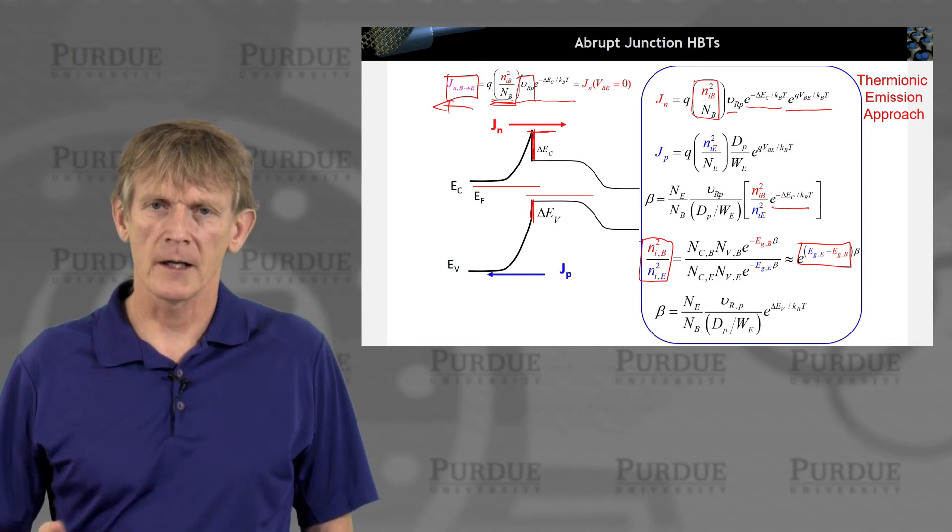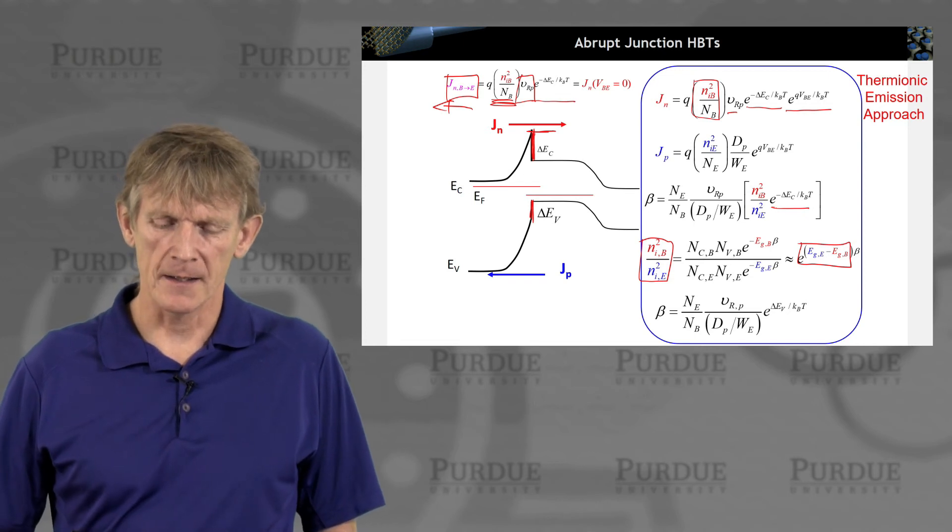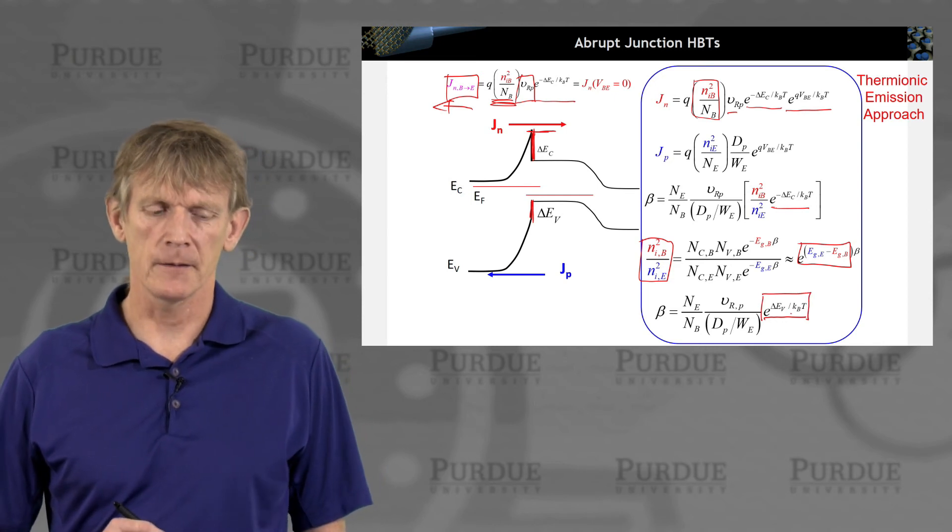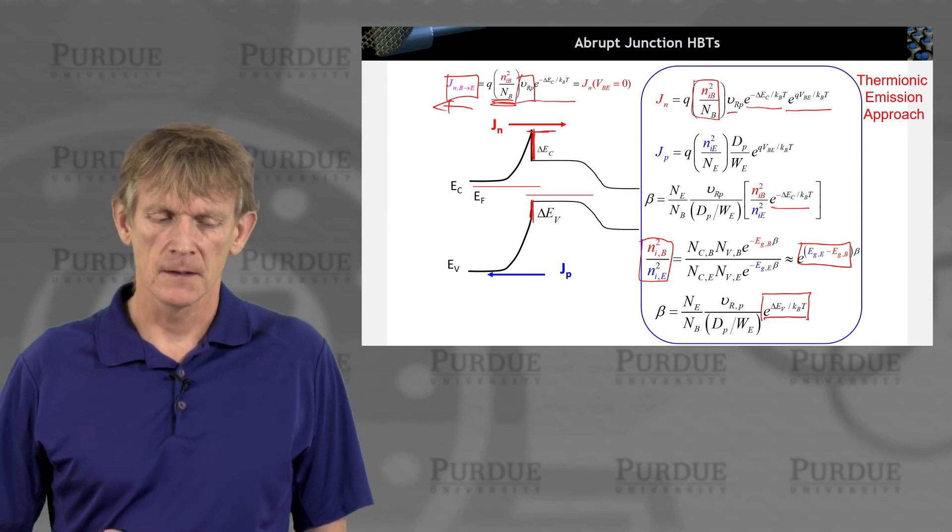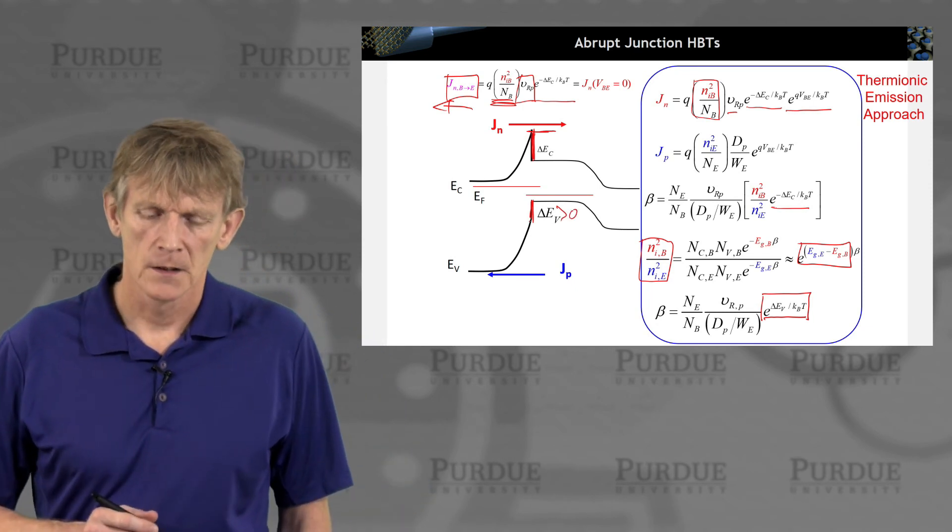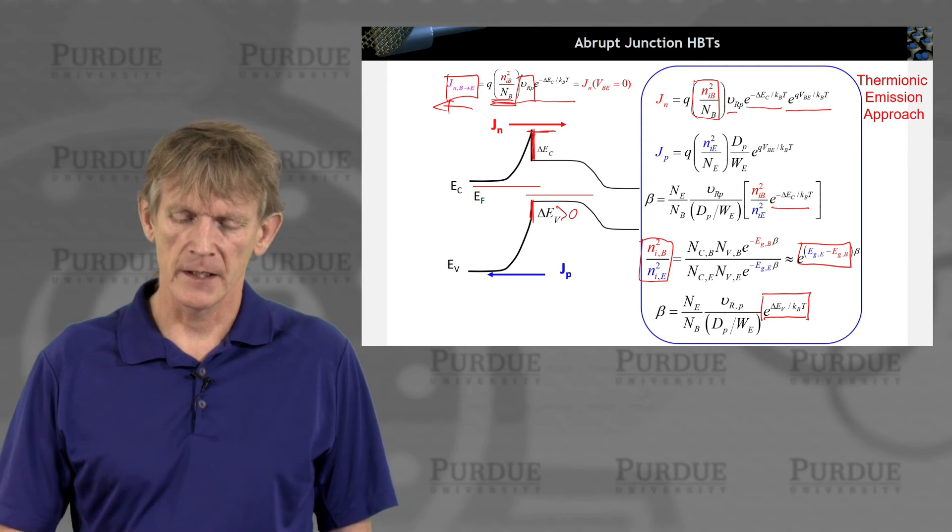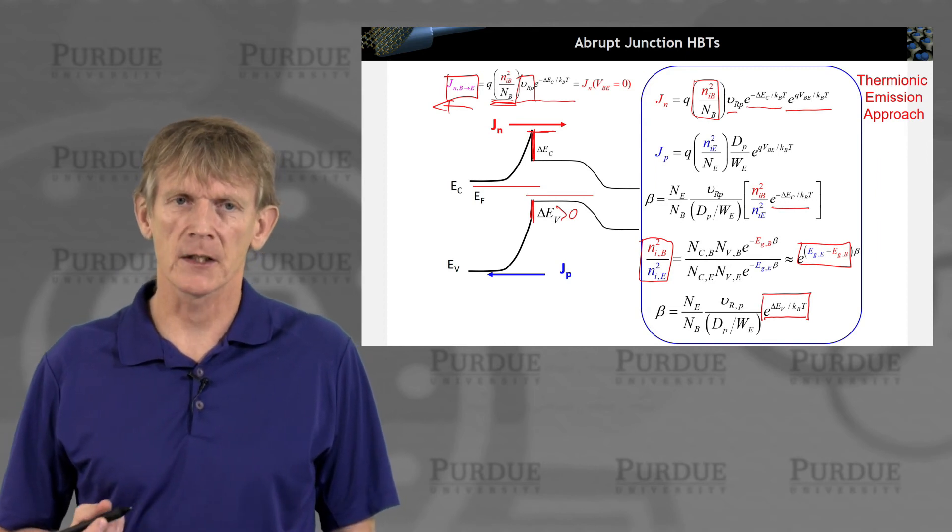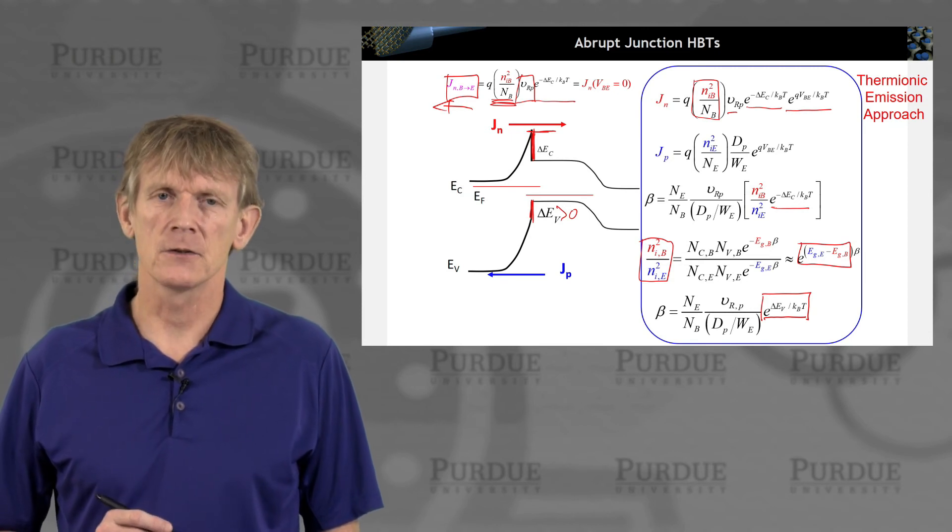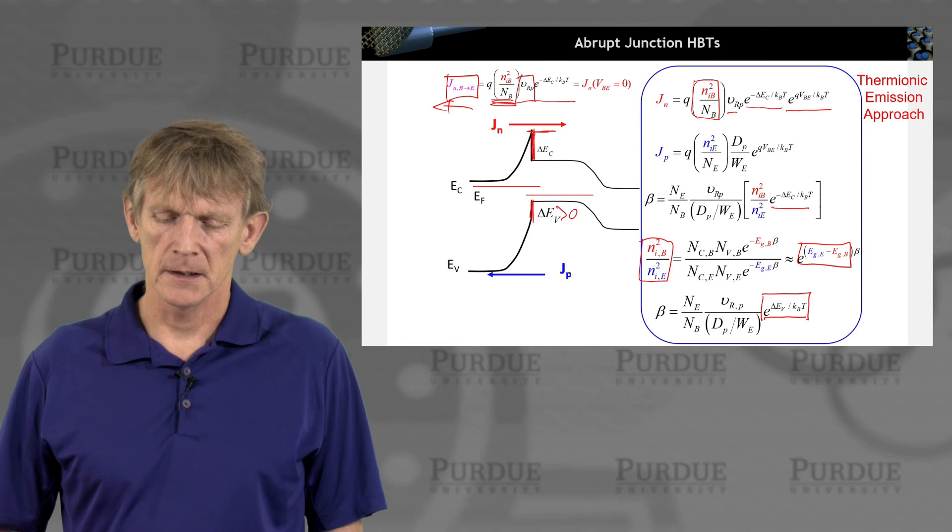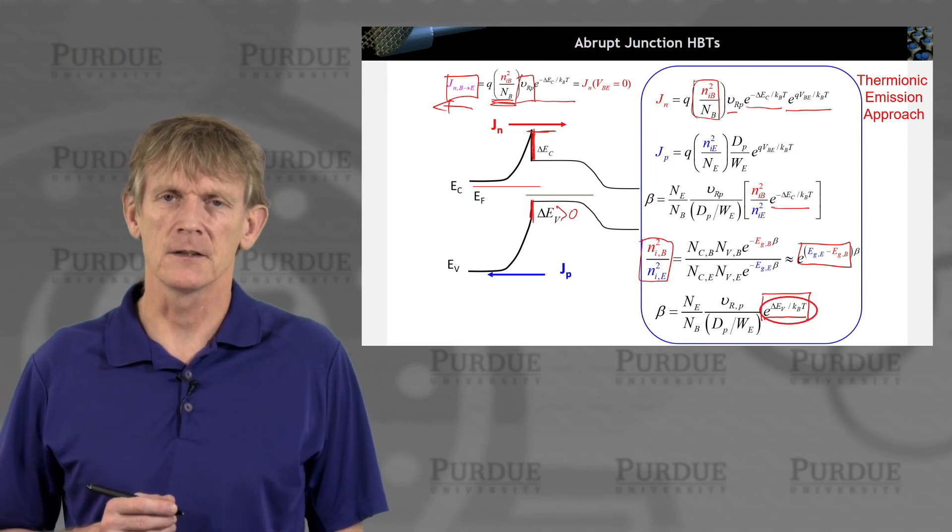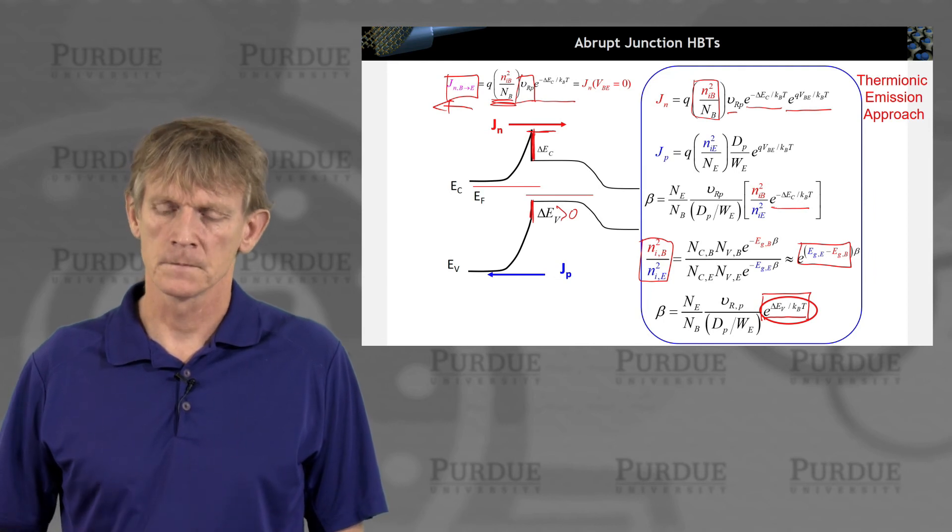If you multiply these terms out, you find that beta has this term delta EV in it. Delta EV is positive, so beta is increased by this exponential, significantly increased if you make this delta EV large compared to KT. But it's only the valence band offset that is entering here in this junction.